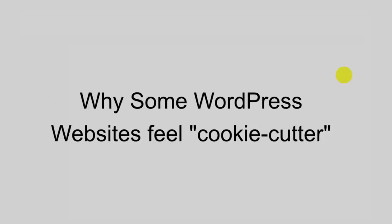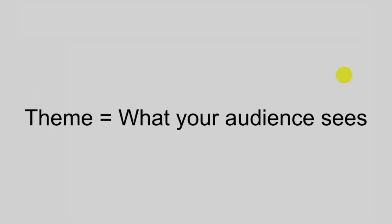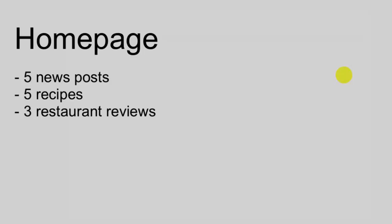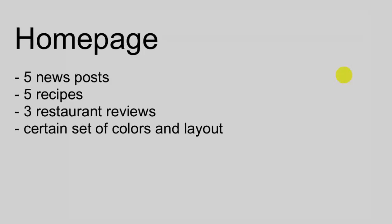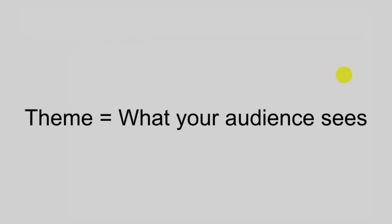WordPress does not place any restrictions on how your website should look. The only reason some WordPress websites feel cookie-cutter is because a certain theme has become very popular. A theme is what controls the public-facing portion of your website — it's what your audience sees. You as the admin see the dashboard, while the public sees what the theme outputs. The theme decides how many posts appear on the homepage, what colors are used, background images, and how everything looks and functions.